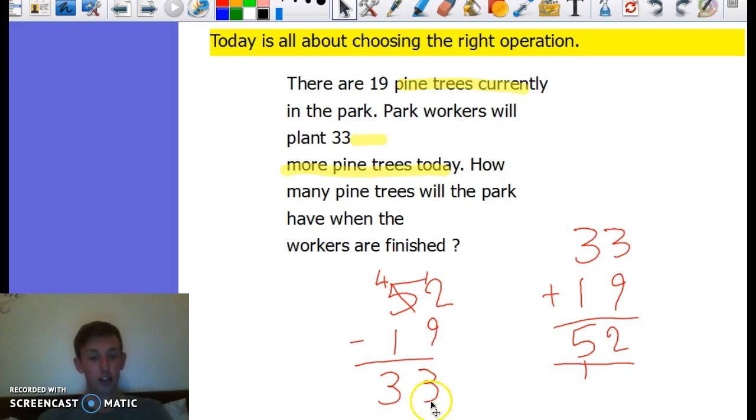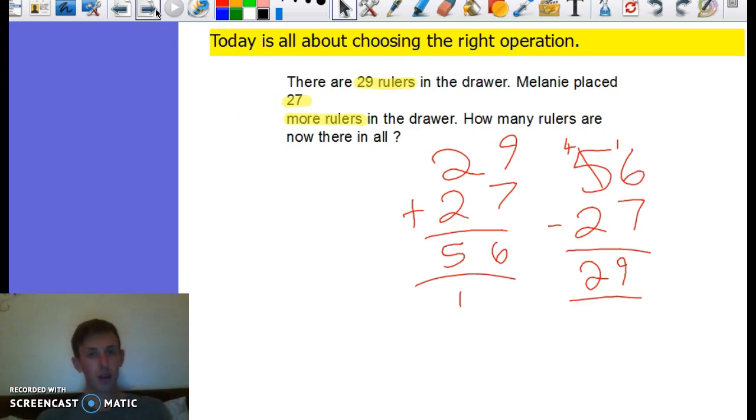Then we had: there are 29 rulers in the drawer, and we placed 27 more rulers in the drawer. How many rulers are there now in all? I underline my key information, and this keyword here is 'more.' So I add these together, which gives me my answer, and then I checked it by doing the inverse.